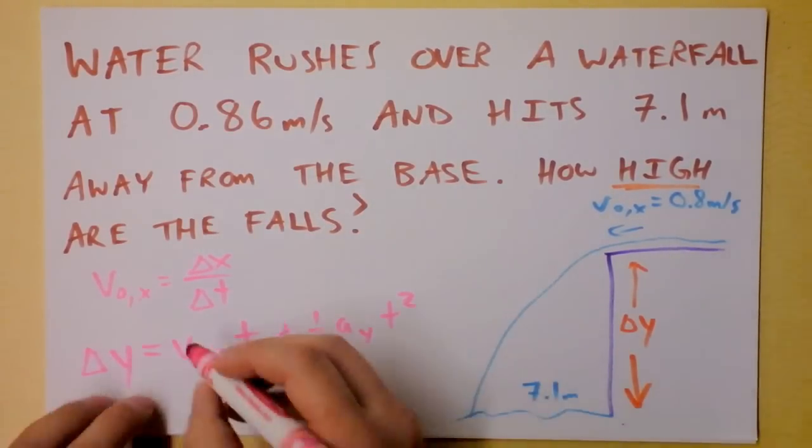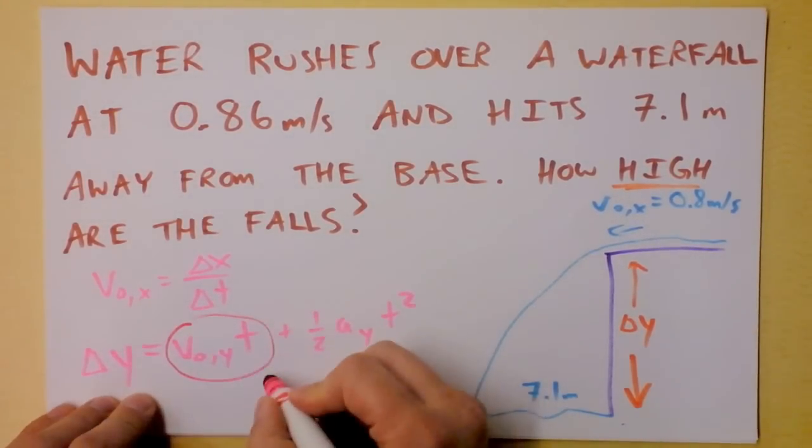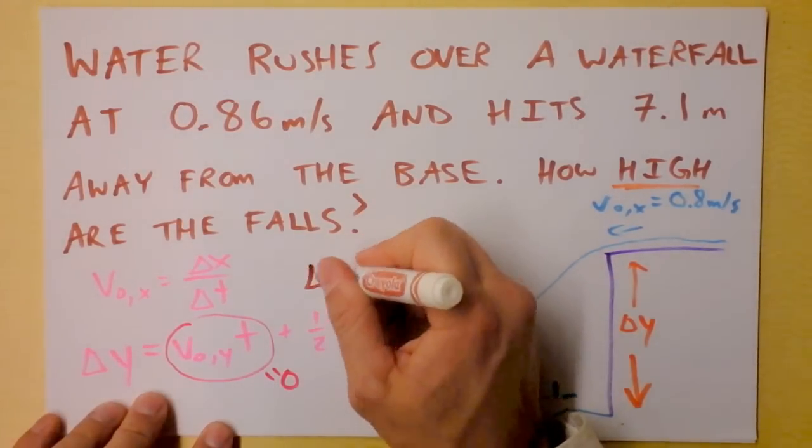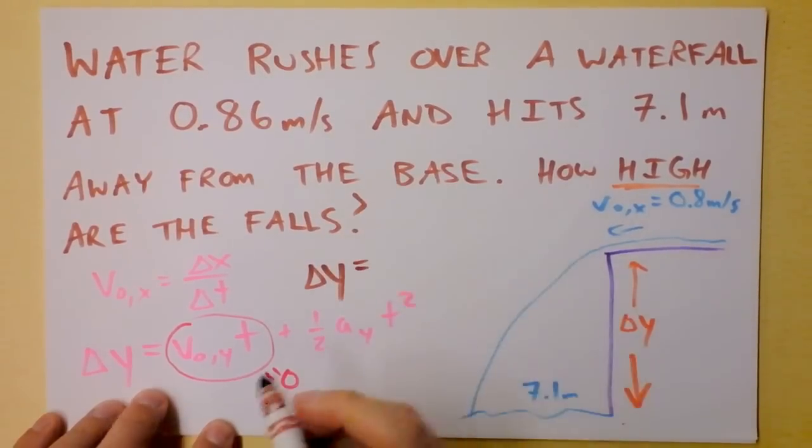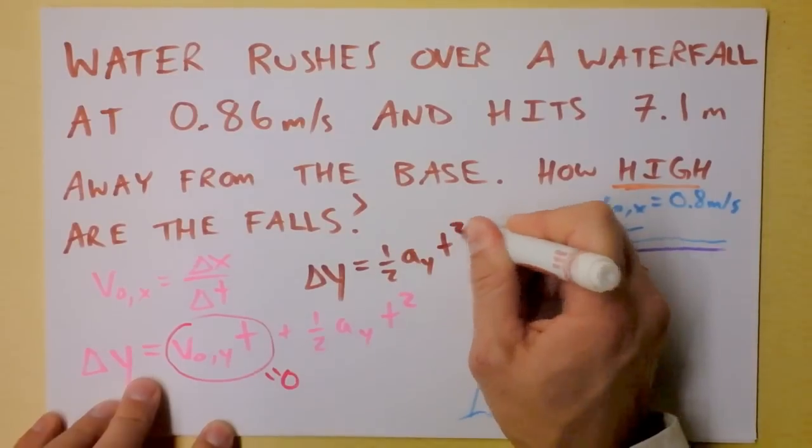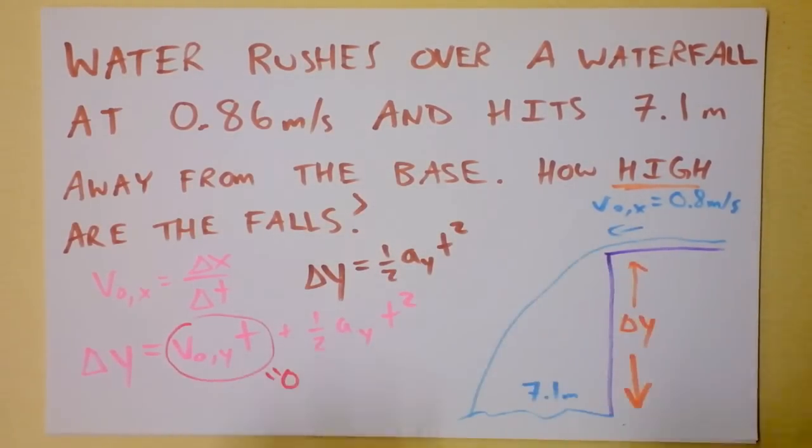Again because it's a class one problem we see this every time. The initial velocity in the y direction is zero so the classic becomes a very simple equation and we're left with simply delta y. How high the falls are will be the absolute value of that, but delta y is one half the acceleration in the y direction times time squared.